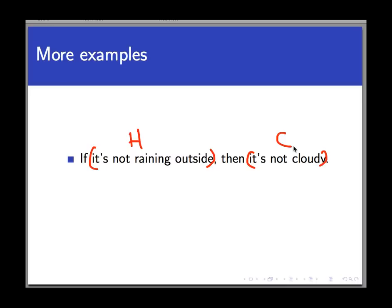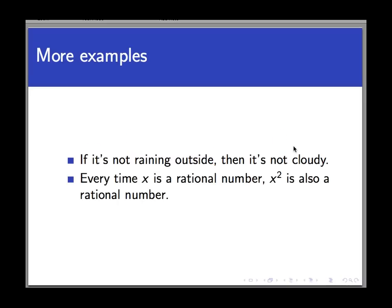Here's another. Every time x is a rational number, x squared is also a rational number. Now you don't have to understand what a rational number is to understand this statement. Here, we don't see the words if or then in the sentence, but as in the previous example, they're implied.